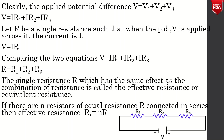Comparing the equations, V = IR1 + IR2 + IR3, and V = IR, we get R = R1 + R2 + R3. The single resistance R which has the same effect as the combination is called effective resistance or equivalent resistance. If there are N resistors of equal resistance R connected in series, then the effective resistance RS = NR.